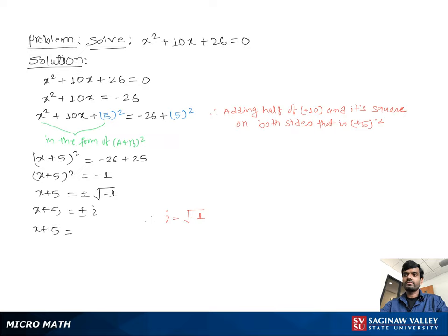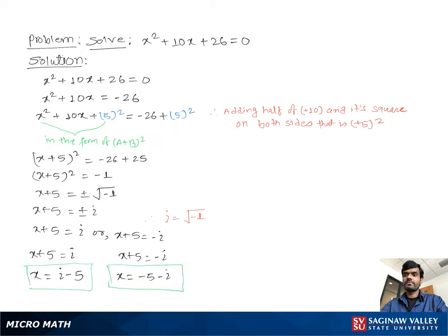Then we write x plus 5 equal to positive i or x plus 5 equal to negative i, and solve these two equations. From the first: x equal to i minus 5. From the second: x equal to negative i minus 5, or negative 5 minus i.